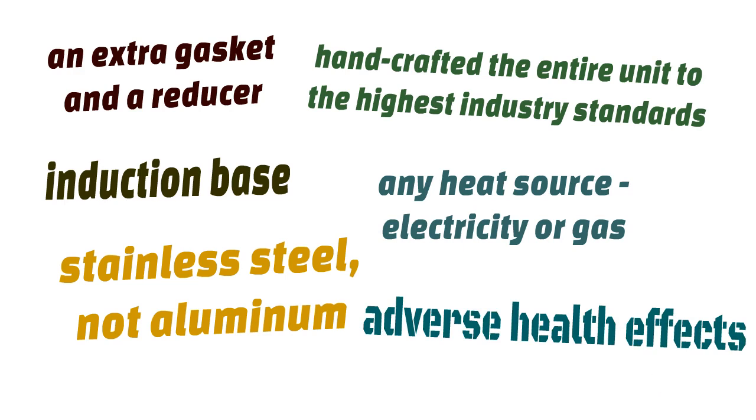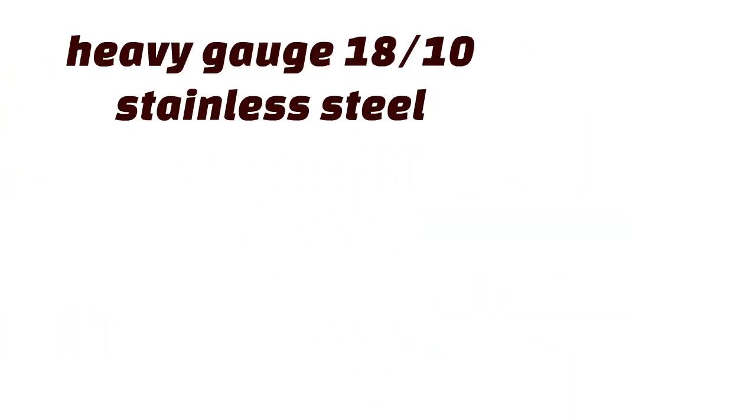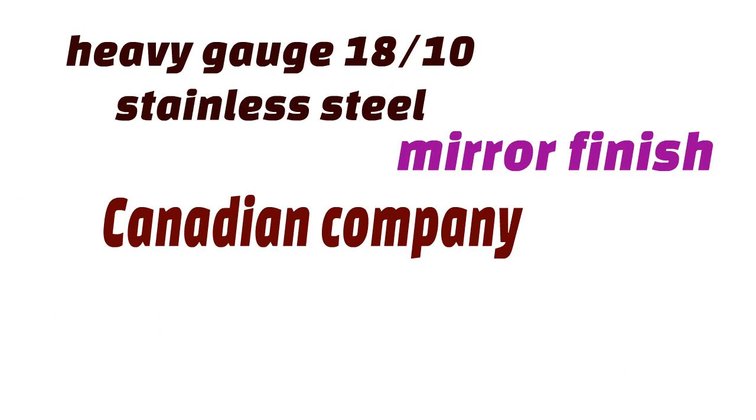Aluminum has attracted a lot of publicity lately on account of its adverse health effects. It releases harmful oxides when coming into contact with hot liquids. Cuisinart have used heavy gauge 1810 stainless steel polished to a mirror finish.